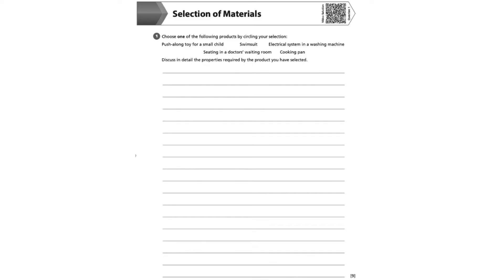We are asked to discuss in detail the properties required by the product you have selected. There are nine marks available, so it is really important that we choose the right product that matches our material specialism. For example, if your specialism is textiles, you may wish to choose the swimsuit. If metals and alloys are your specialism, you would probably be best suited to the cooking pan — the example I will use for the model answer today. Choosing the product that best suits your specialism maximises your marks.